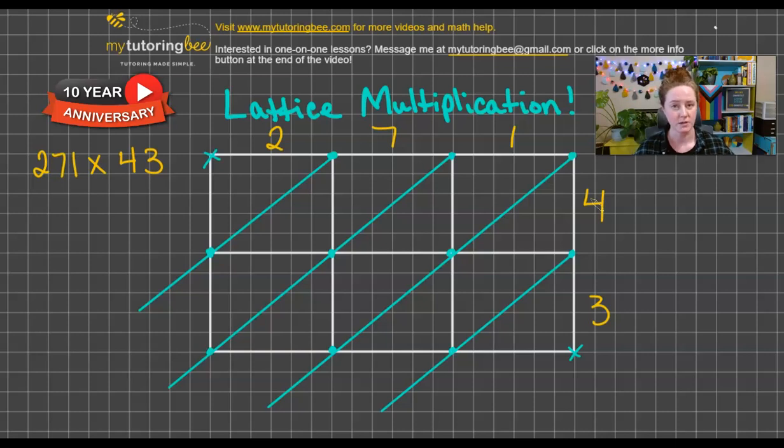Whenever we have a single digit product or single digit answer, we do want to write it as two digits and put a zero or something in this place. I like to put a zero there. We definitely want to put the four down in this lower little triangle of this square just so that it represents zero four and not four zero because that would be 40. So we want zero four here.